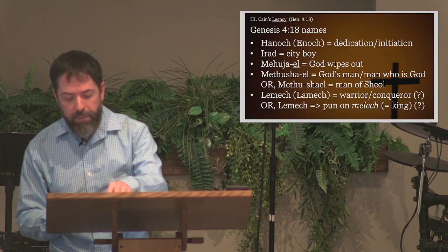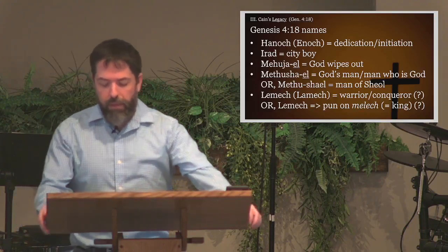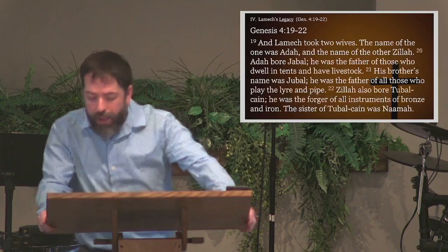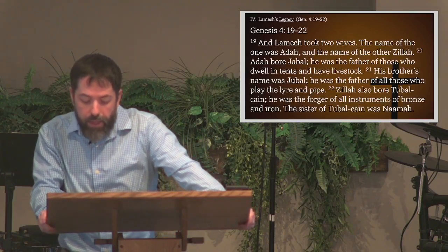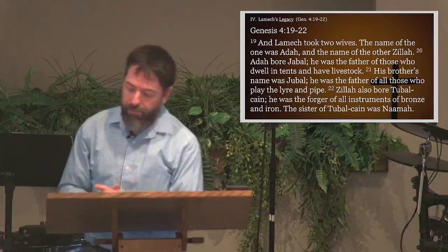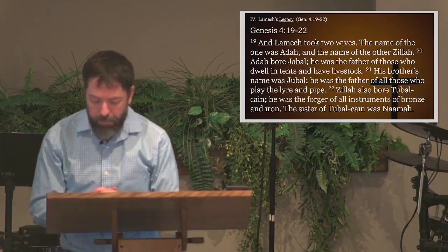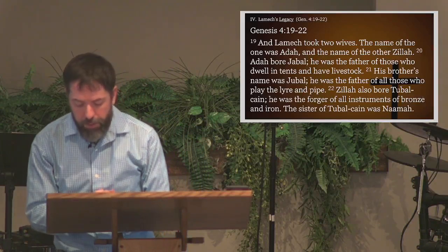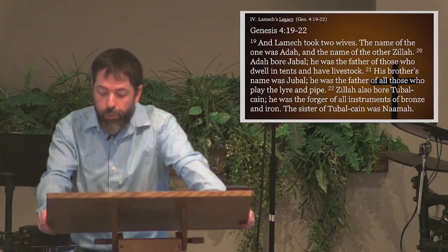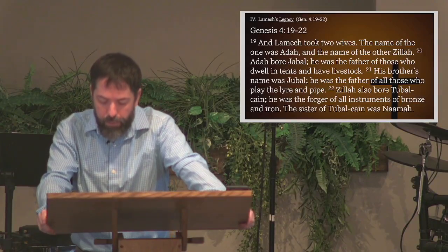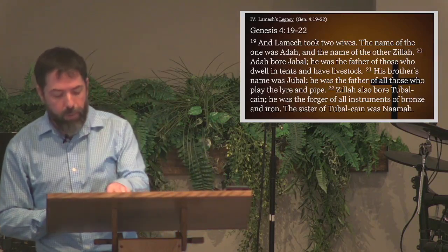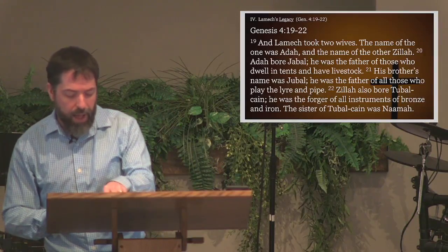Verses 19 to 22 provide some summary details. And Lamech took two wives. The name of the one was Adah, and the name of the other, Zillah. Adah bore Jabal. He was the father of those who dwell in tents and have livestock. His brother's name was Jubal. He was the father of all those who play the lyre and pipe. Zillah also bore Tubal-Cain. He was the forger of all instruments of bronze and iron. The sister of Tubal-Cain was Na'amah.